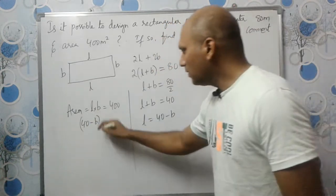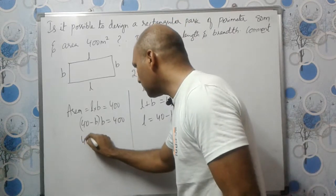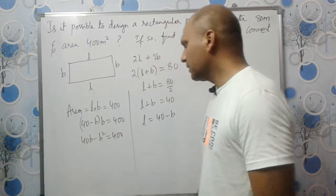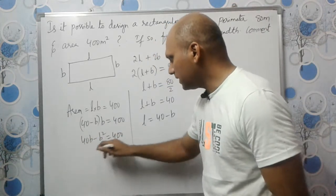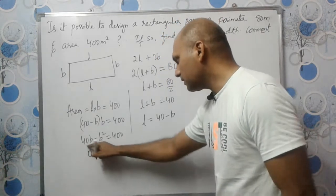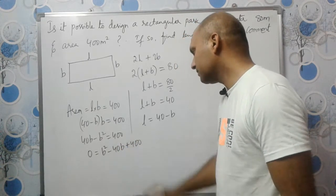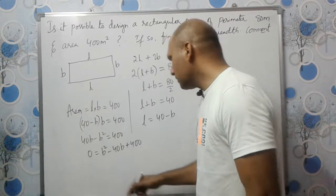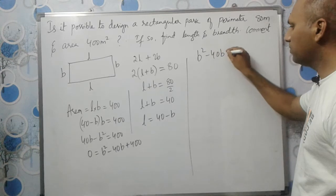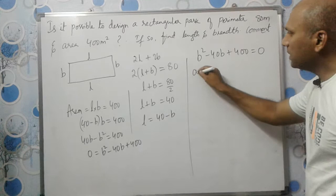L is 40-B, so (40-B)×B equals 400. This gives us 40B-B² equals 400. If you send these two terms on this side, we will have B²-40B+400 equals 0. So we have this equation finally.